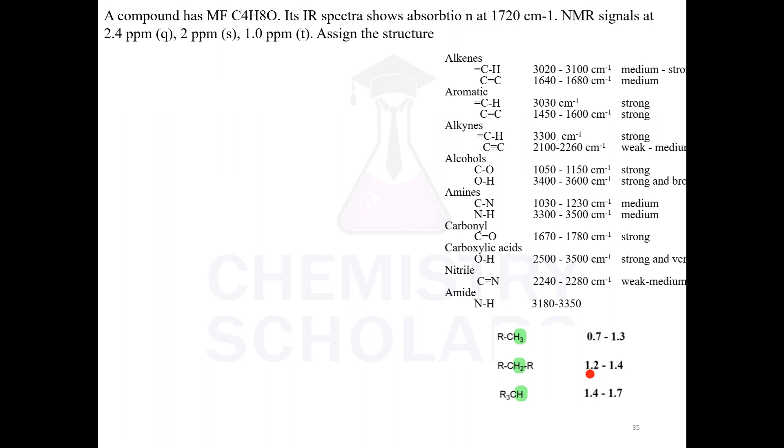Now we will take one example where extra data is given and calculate the structure and assign it. Molecular formula C4H8O, absorption at 1720 in IR, NMR signals are these. Let's go one by one. I have kept these values for your reference. First, let's calculate. Whenever you are assigning a structure, calculate IHD first.